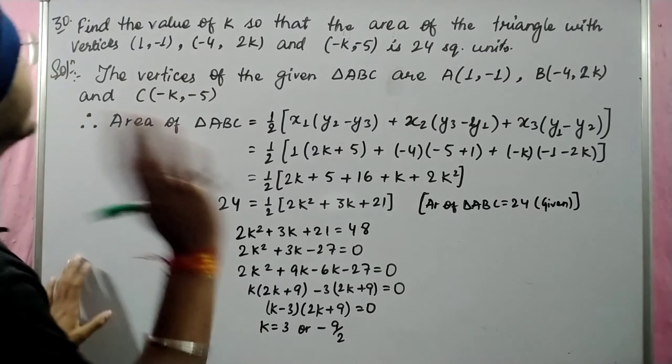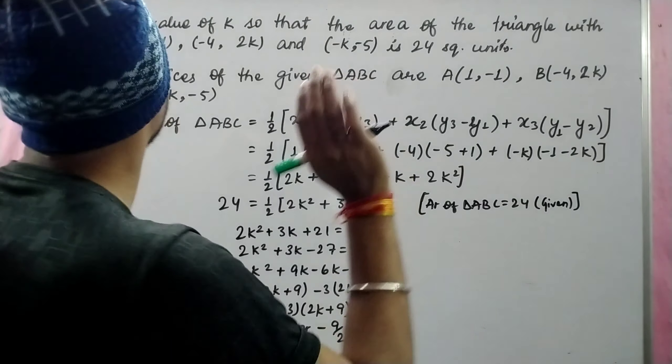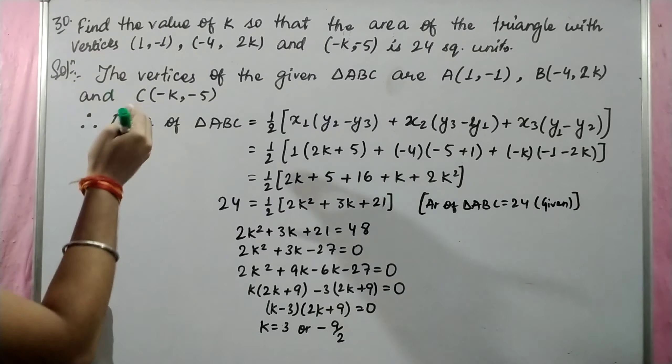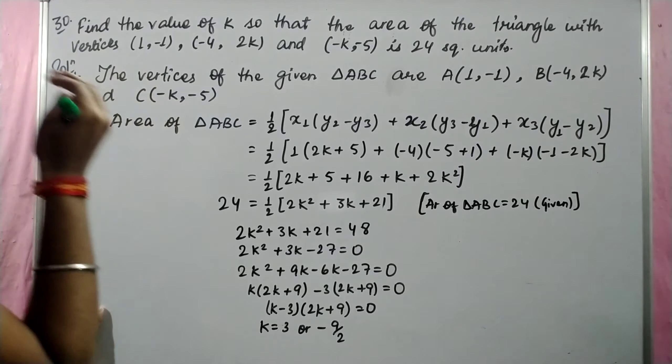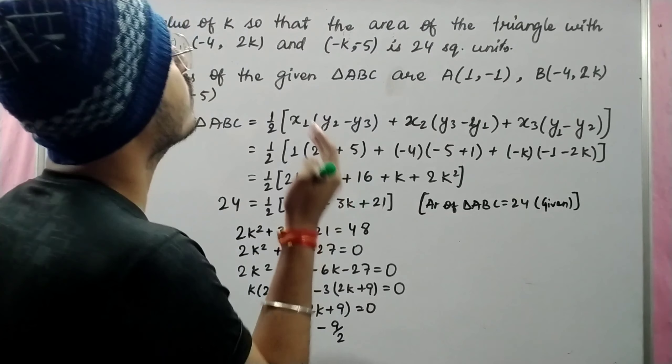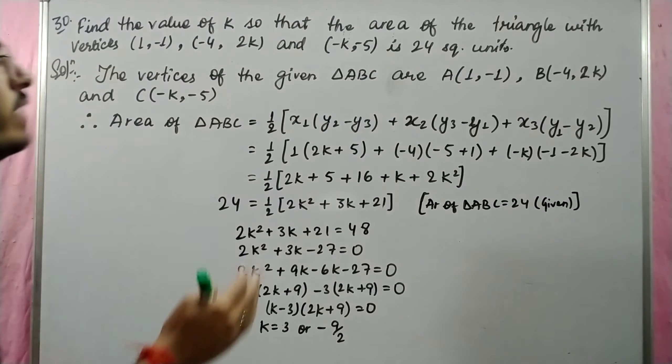Let's see our question number 30. Find the value of k so that the area of the triangle with vertices (1, -1), (-4, 2k) and (-k, -5) is 24 square units.